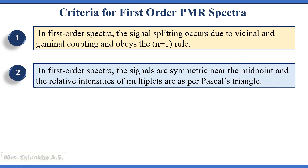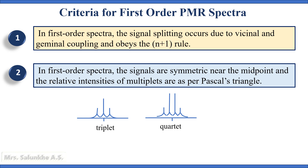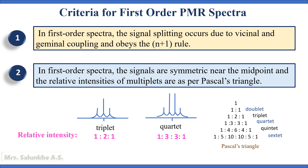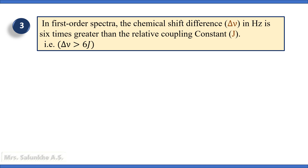The second criteria is that in first order spectra, the signals are symmetric near the midpoint and the relative intensities of multiplets are as per Pascal's triangle. For example, in case of a triplet, the signal splits into 3 lines with relative intensities 1:2:1. In case of a quartet, the signal splits into 4 lines with relative intensities 1:3:3:1. Those relative intensities are determined with the help of Pascal's triangle.